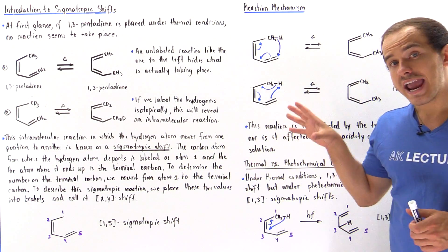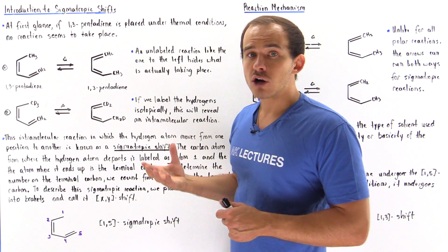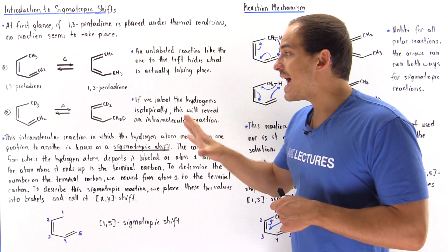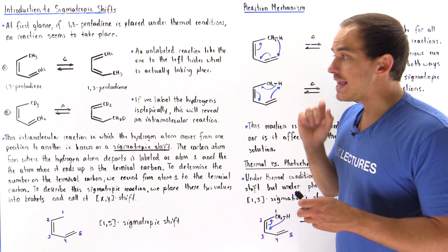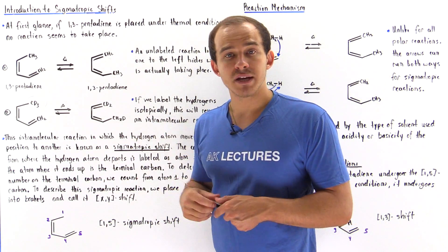Now, the carbon atom where the H atom begins on is known as the starting carbon. That atom is given the number one. And the last carbon where our H atom ends up on is known as the terminal carbon atom.